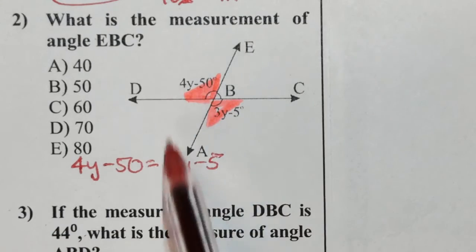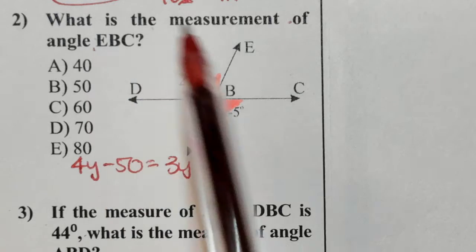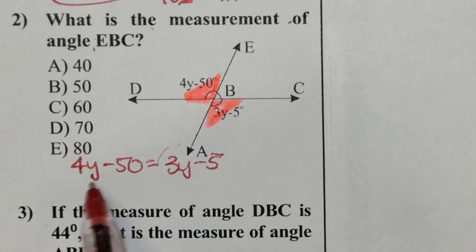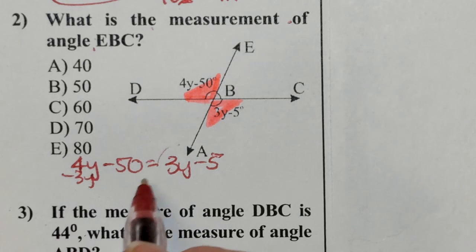I'm going to solve for y and then come back up and make sure I answer the question. So I'm going to take this 3y, which is positive, and when I move it to the opposite side, I need to change the sign.